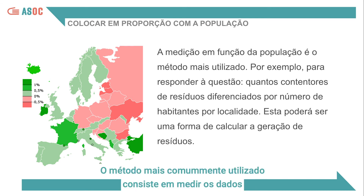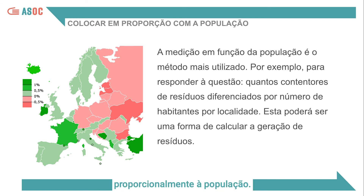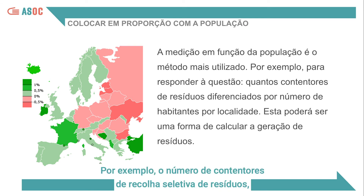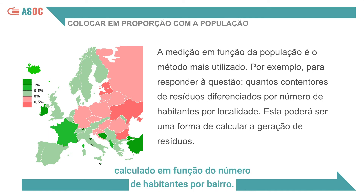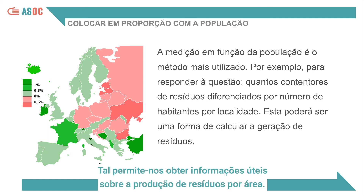The most commonly used method is to measure data in proportion with the population. For example, the number of bins of differentiated waste in our cities, calculated by number of inhabitants per neighbourhood. This allows us to obtain useful information about waste generation by area.